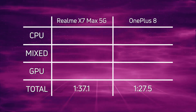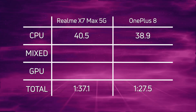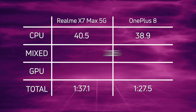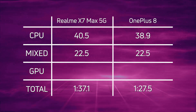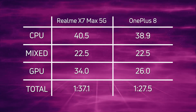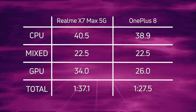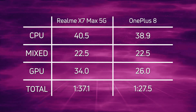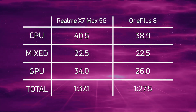Let's break down the scores. Looking at CPU: 40.5 versus 38.9 — a win of 1.6 seconds for the OnePlus 8. Mixed CPU/GPU was a dead heat: 22.5 and 22.5. But the real big difference is between the Mali and the Adreno — 34 seconds for the Realme X7 Max 5G versus 26 seconds for the OnePlus 8, a difference of 8 seconds in favour of the OnePlus 8. The OnePlus 8 won with 1 minute 27.5.